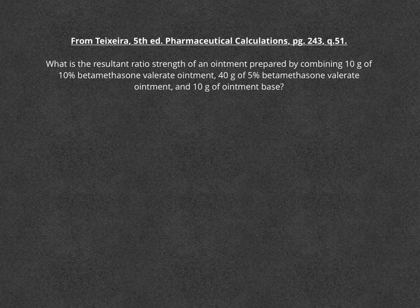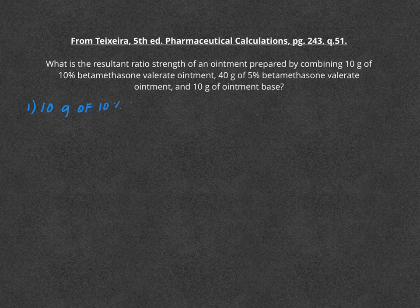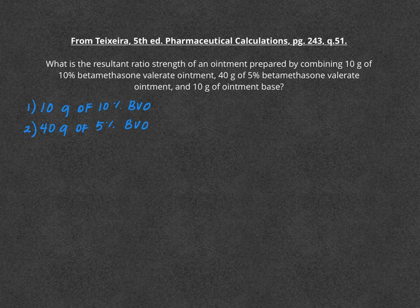As always, we need to know what we're working with, so let's start with what we know. We have 10 grams of 10% BVO—I'm going to call it BVO from here on out to make it simple. We have 40 grams of 5% ointment available, and then finally we're going to mix those two in 10 grams of ointment base.